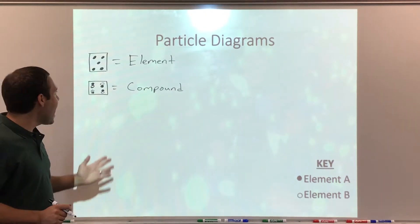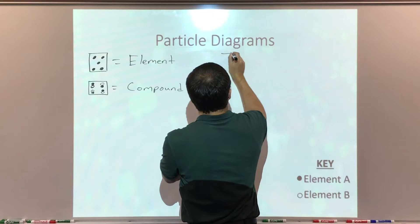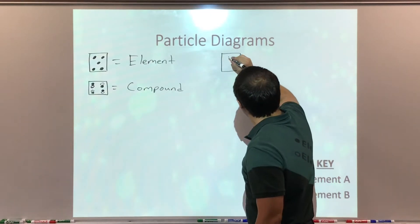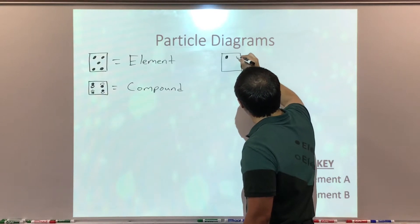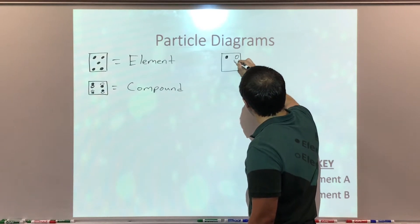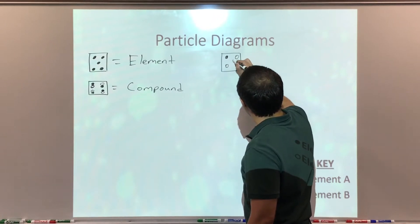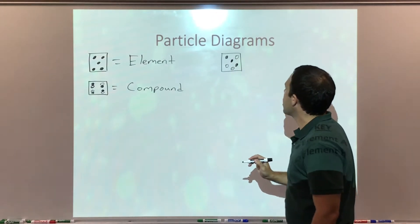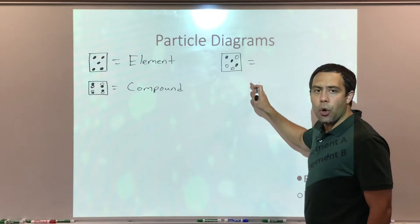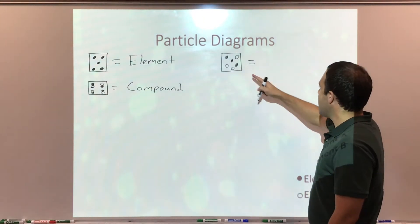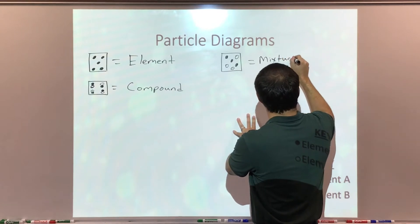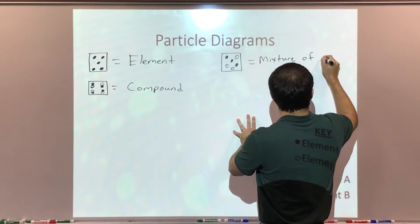Now I can have a mixture of elements. So in my next particle diagram, I can draw one shaded, one open, one open, one shaded, and a shaded and an open. Here I have both element A and element B in this particle diagram — a mixture of elements.